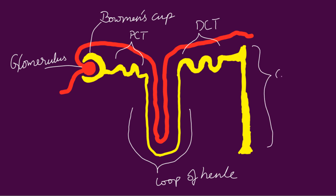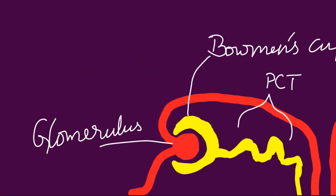The distal convoluted tubule joins the collecting duct. The nephron is lined by a network of capillaries, and the exchange of salt and fluid occurs between these capillaries and the nephron. If we take a close look near the proximal convoluted tubule, the ions sodium, potassium, chloride and water are reabsorbed into the capillaries, and the ions hydrogen and ammonium are absorbed into the proximal convoluted tubule.